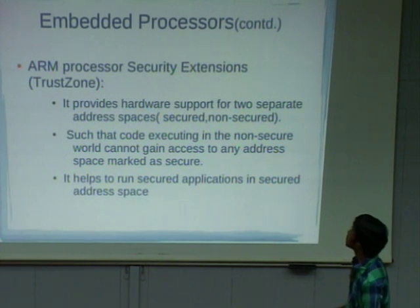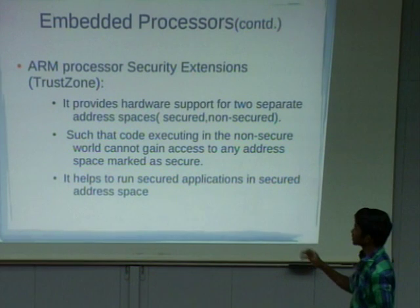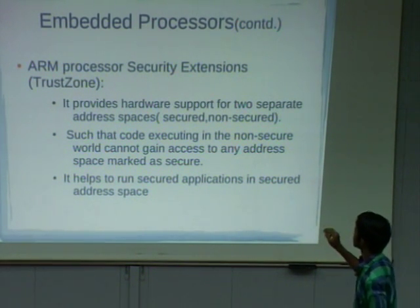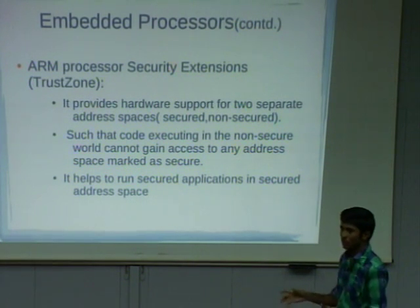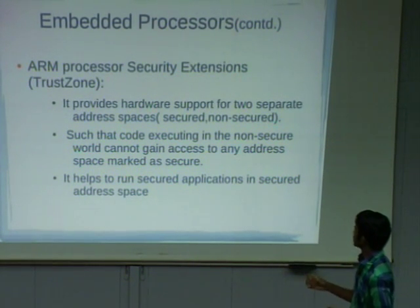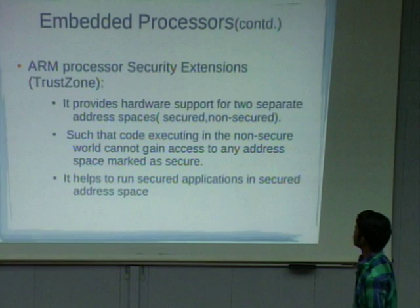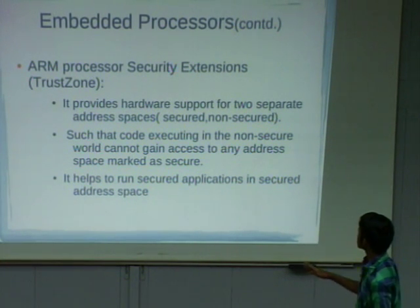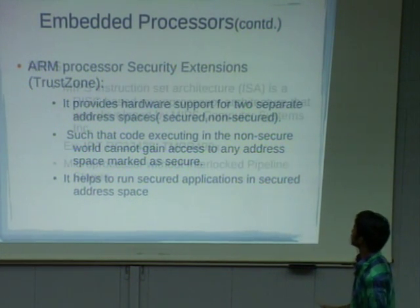Now coming to the security zone. In ARM processors, the hardware itself provides security to data by providing two address spaces: secured and non-secured. For applications requiring security — such as authentication or access control — we use secured mode. Applications that don't need security run in non-secured mode. This is an advantage provided by ARM.